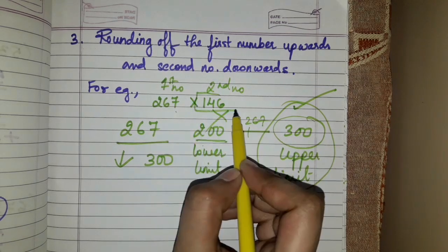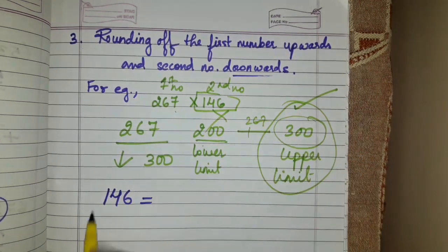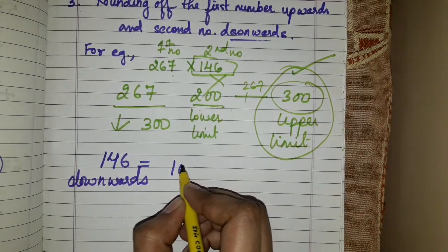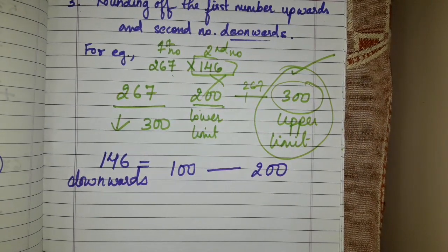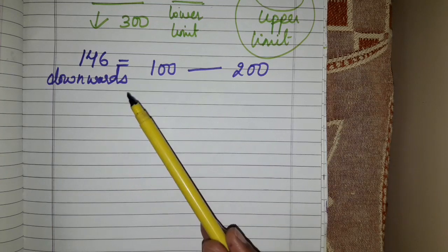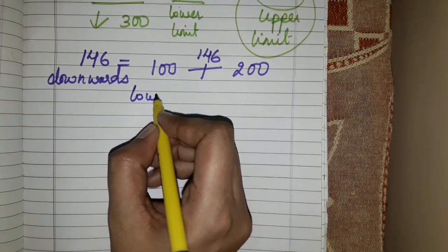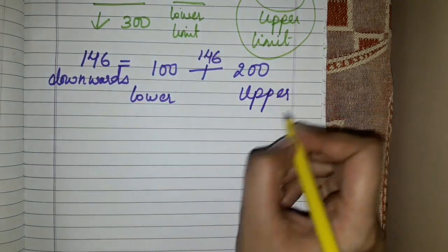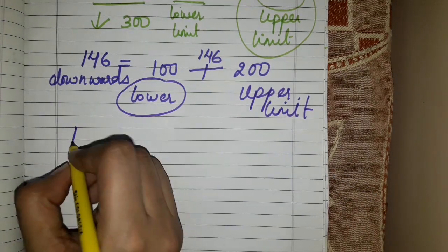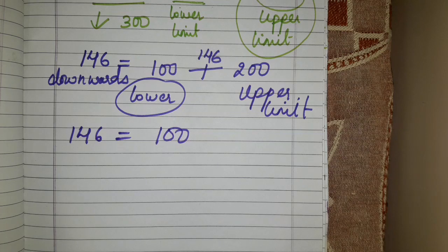Now the second number is 146. We have to round it off downwards. It comes between 100 and 200. This is the lower limit and this is the upper limit. When rounding downwards, we obviously choose the lower limit, not the upper limit. So 146 rounded downwards gives 100.